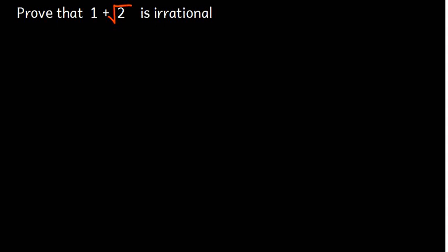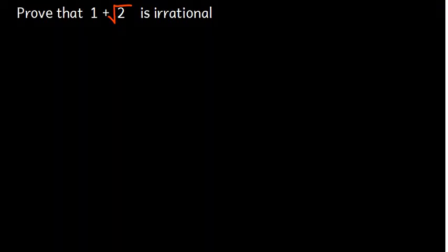Let us prove that 1 plus the square root of 2 is irrational. Whenever you are proving irrational numbers, we use the method called proving by contradiction.